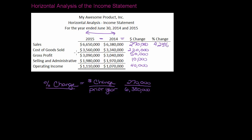Cost of goods sold: $220,000 divided by $3,340,000 is equal to 6.59 percent. Gross profit: $50,000 divided by $3,040,000 — that's the 2014 number — is 1.64 percent. My change in selling and administrative: $10,000 over $1,970,000 is only 0.51 percent. And my operating income: $40,000 divided by $1,070,000 is equal to 3.74 percent.